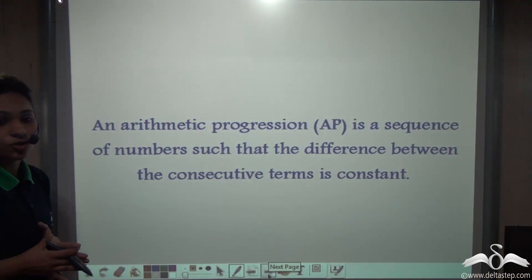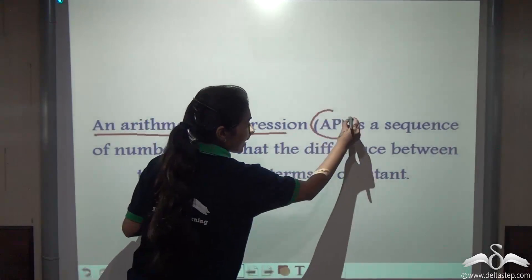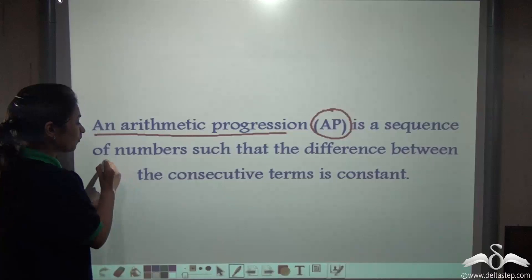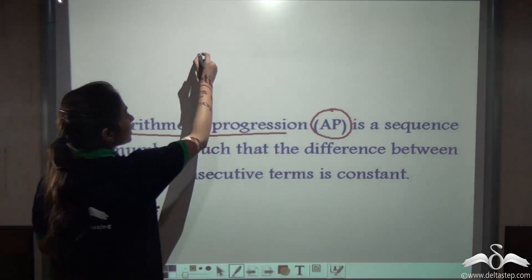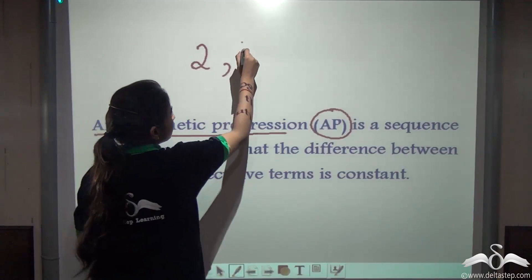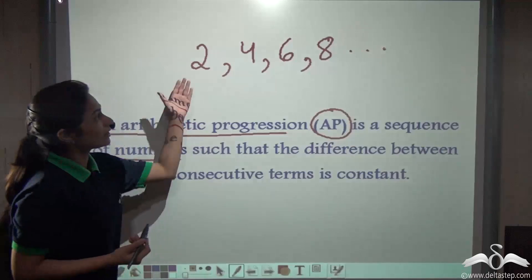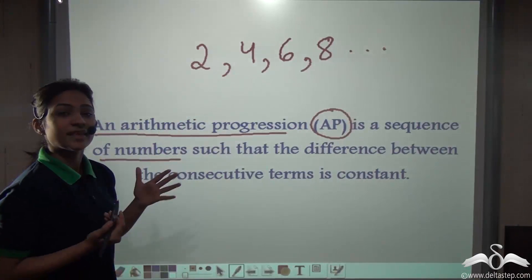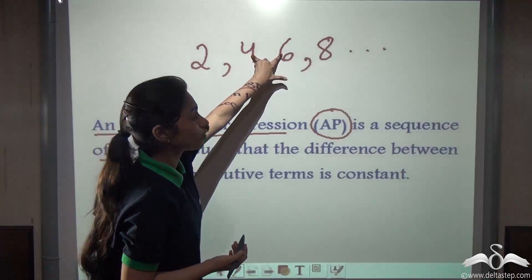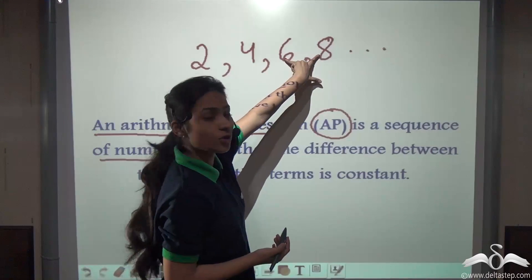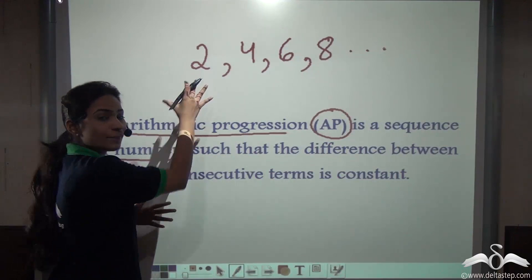So what is an AP series or arithmetic progression? An arithmetic progression, called AP, is a sequence of numbers — just like 3, 4, 5, 6, 7 or any sequence. You can take multiples of 2. Check their constant difference: 2 plus 2 gives you 4, 4 plus 2 gives you 6, 6 plus 2 gives you 8 and so on. The constant difference remains 2. So this is an AP series.